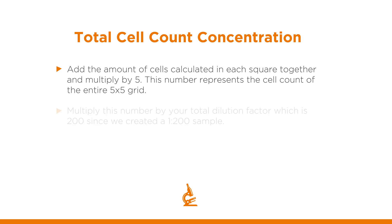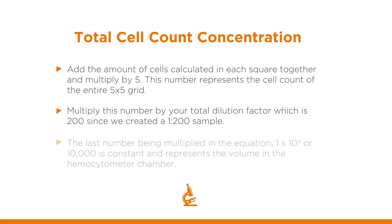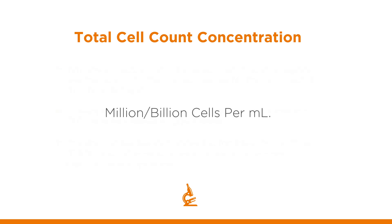Multiply this number by your dilution factor which is 200 since we created a 1 to 200 dilution sample. The last number being multiplied in the equation, 1 to 10 to the 4th or 10,000, is consistent and represents the volume of the hemocytometer chamber. The result will be in hundreds of millions or billions of cells per milliliter.